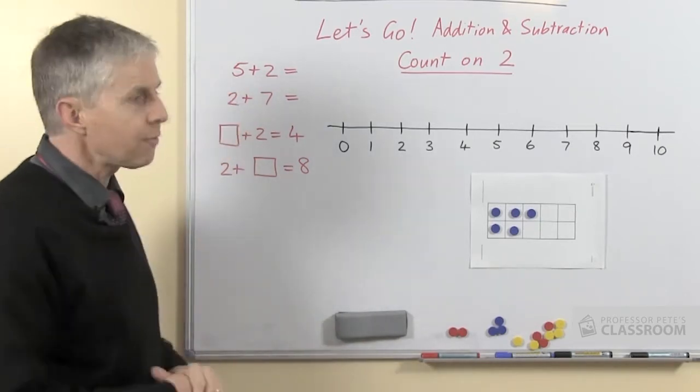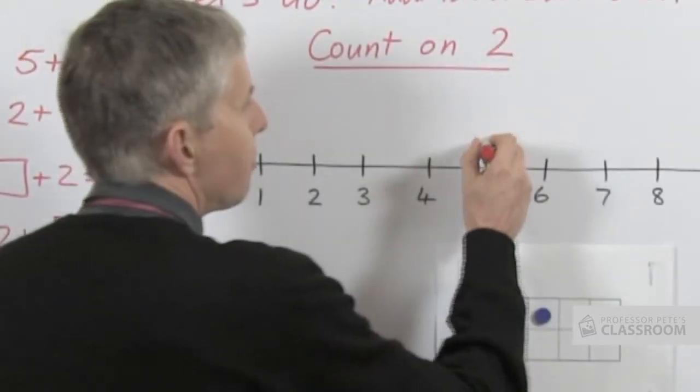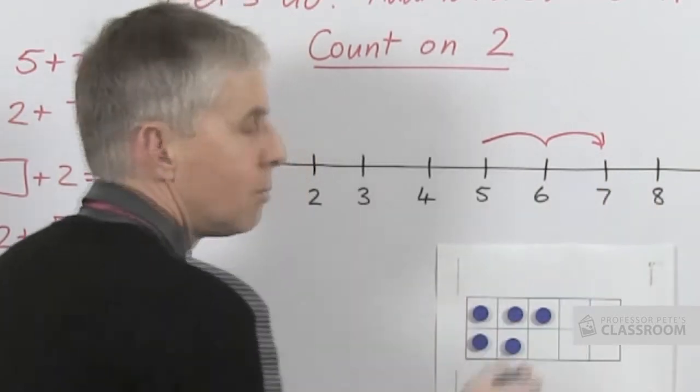So if we were adding 5 plus 2, of course quite simply with the number line we would start from the 5, make 2 more hops, what number do we get to?